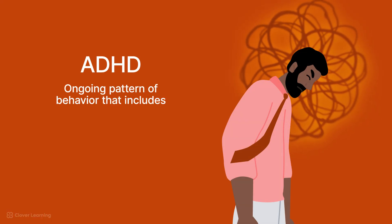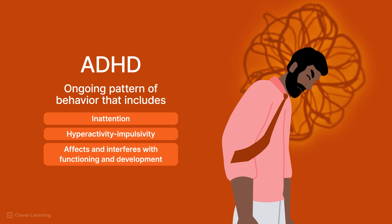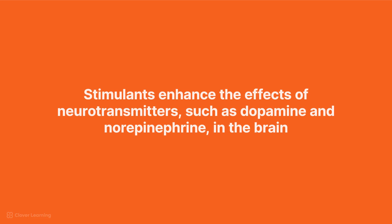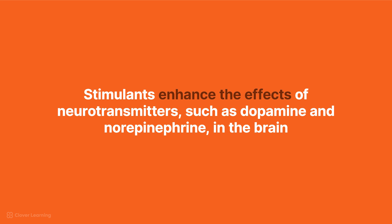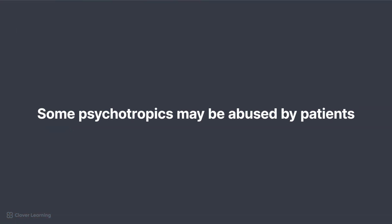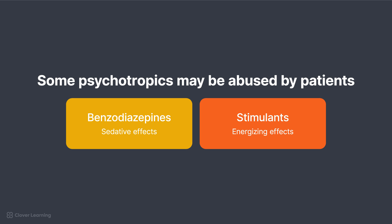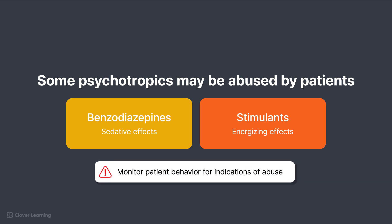Stimulants are used to treat Attention Deficit Hyperactivity Disorder (ADHD) and some sleep disorders like narcolepsy. ADHD is characterized by an ongoing pattern of inattention and/or hyperactivity-impulsivity that interferes with functioning and development. Stimulants work by enhancing the effects of neurotransmitters such as dopamine and norepinephrine. Common examples include dextroamphetamine and amphetamine combination (Adderall) and methylphenidate (Ritalin, Concerta). Some psychotropics may be abused — most commonly benzodiazepines for sedative effects and stimulants for energizing effects — so monitor patient behavior for indications of abuse, such as requesting refills ahead of schedule.